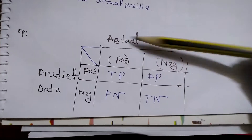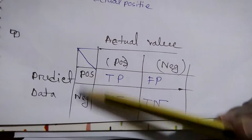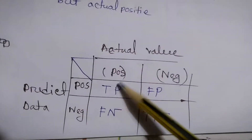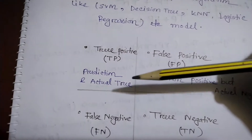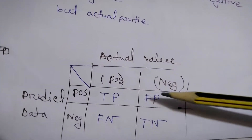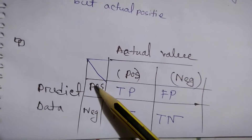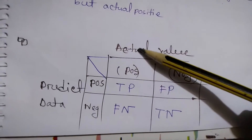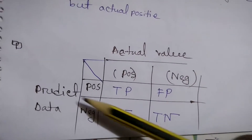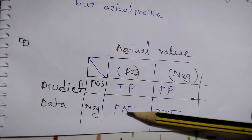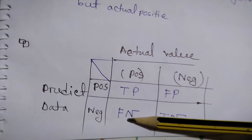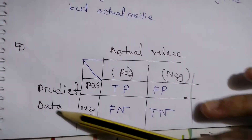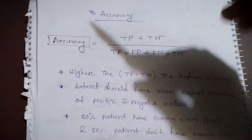In the confusion matrix diagram, the actual data has positive and negative, and the predicted data also has positive and negative. When actual is positive and predicted is positive, it's True Positive. When actual is negative but predicted is positive, it's False Positive. When actual is positive but predicted is negative, it's False Negative. When actual is negative and predicted is negative, it's True Negative.